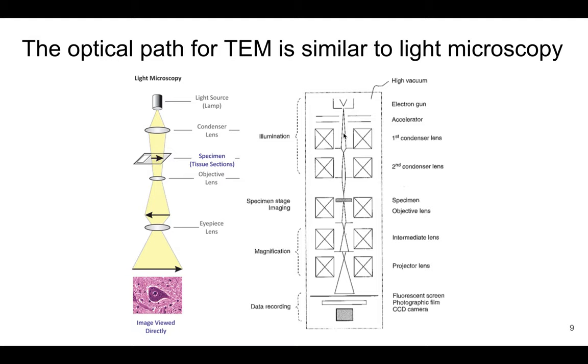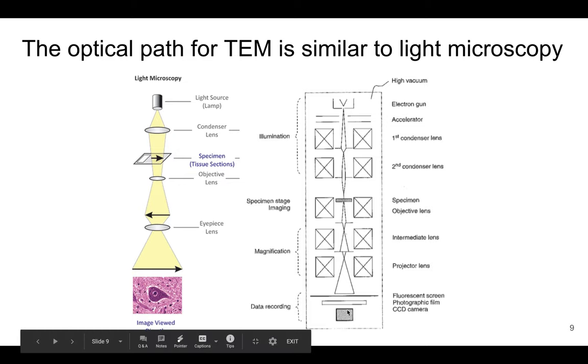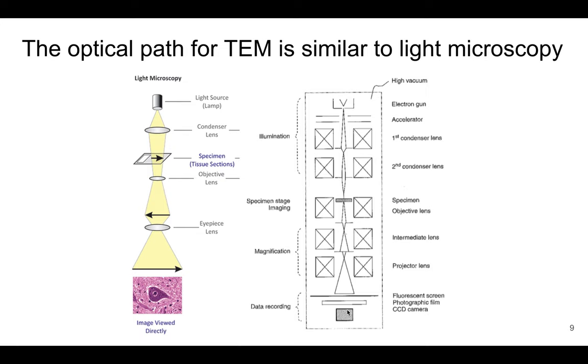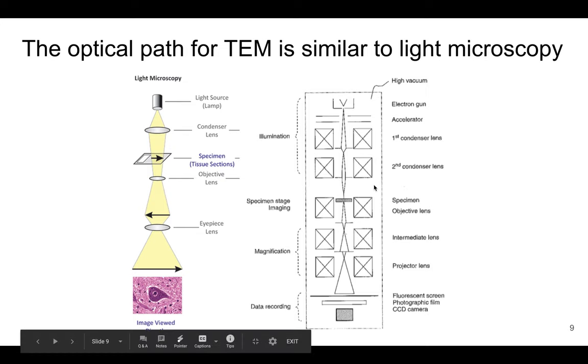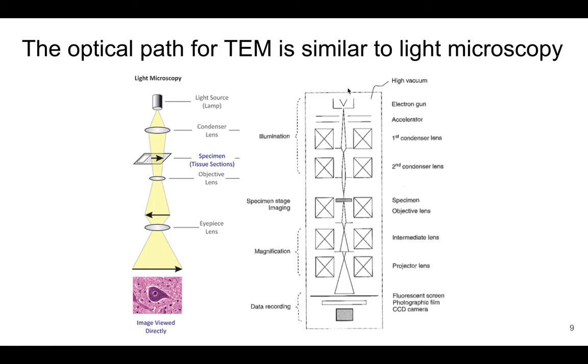Then we have lenses which focus the beam on the specimen. And then we have an objective, intermediate, and we have various lenses, but their function are basically to magnify the image and project it onto a screen, similar to your eye. And so really, the structure of the lenses, these being electromagnetic lenses, is different. The structure of the light source or electron gun is different, but the optical path is actually very similar. And so there's obviously modifications and differences, but they are fairly similar to start with.